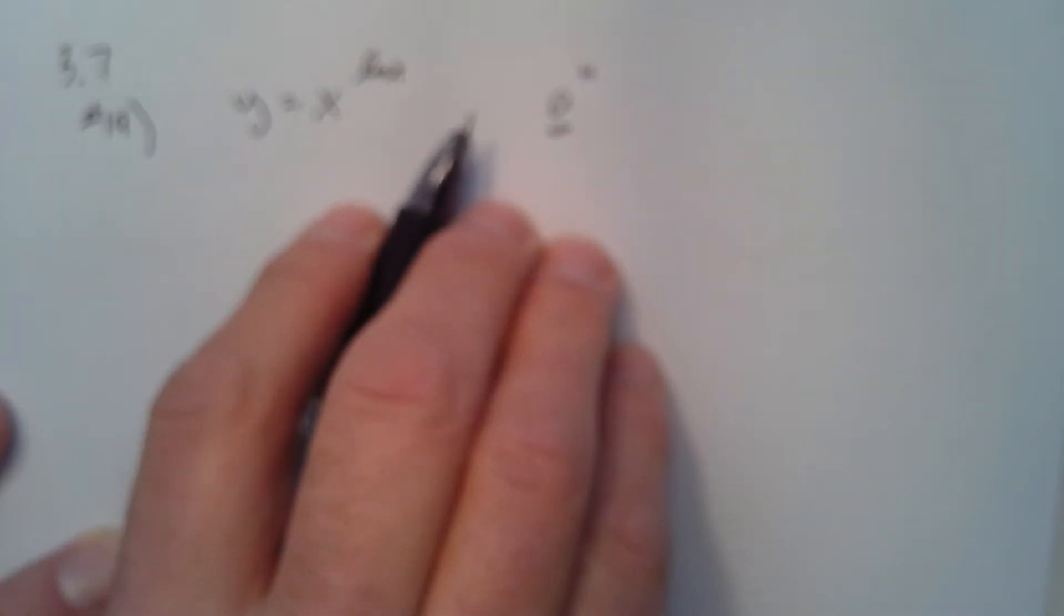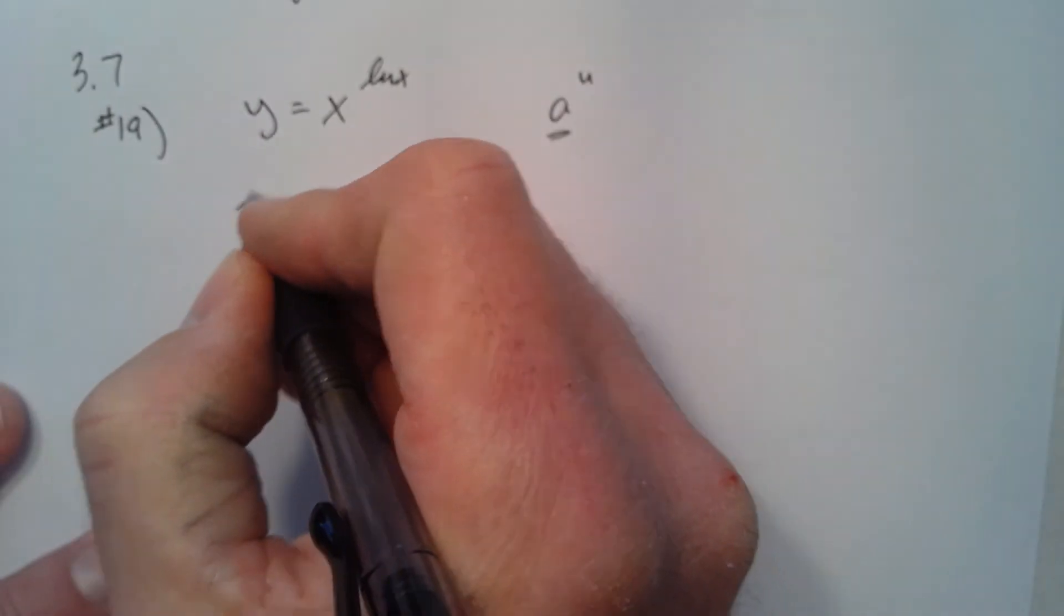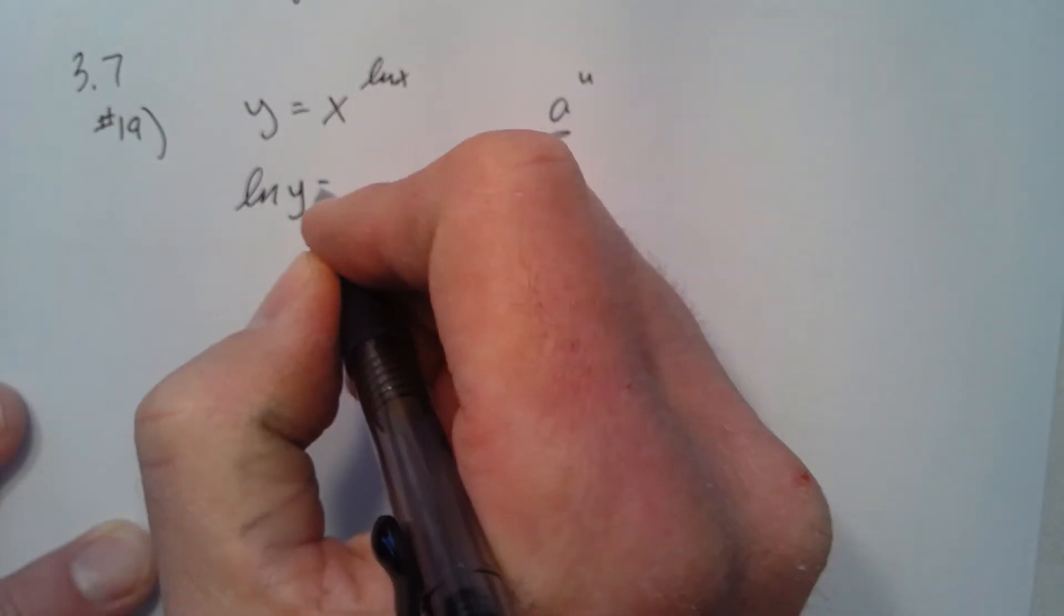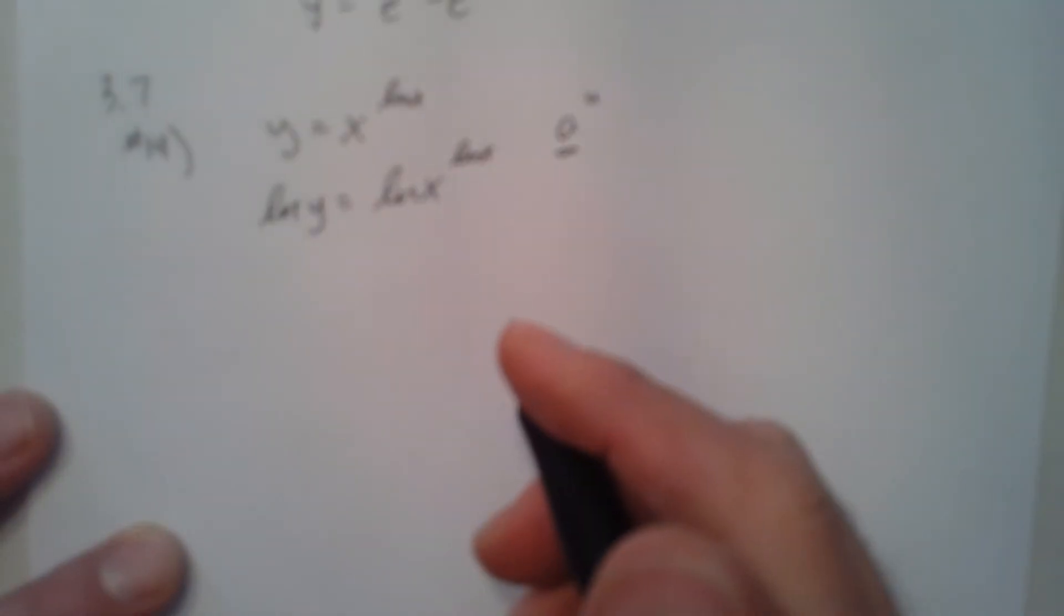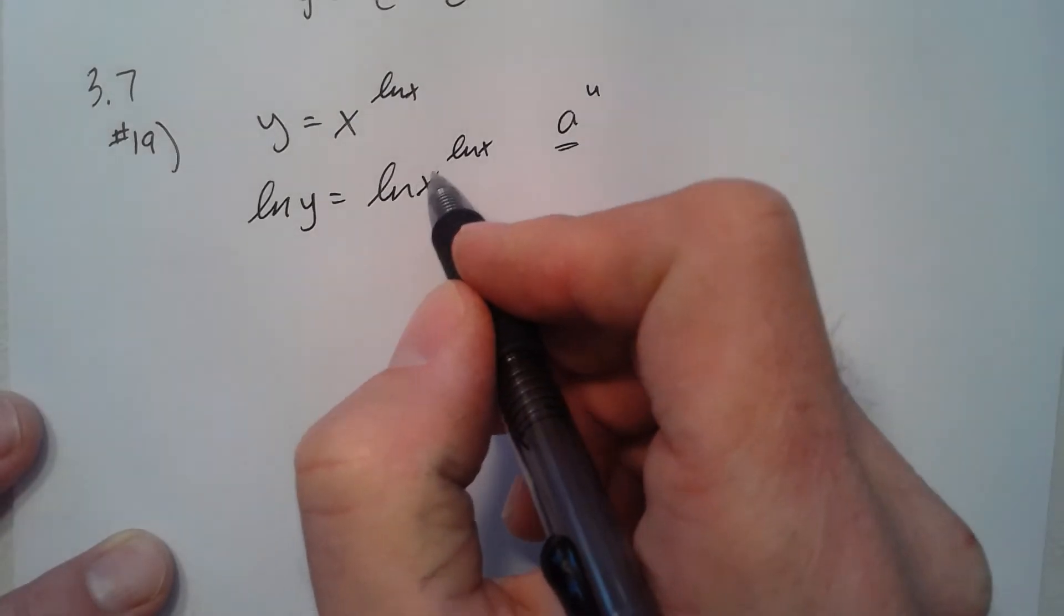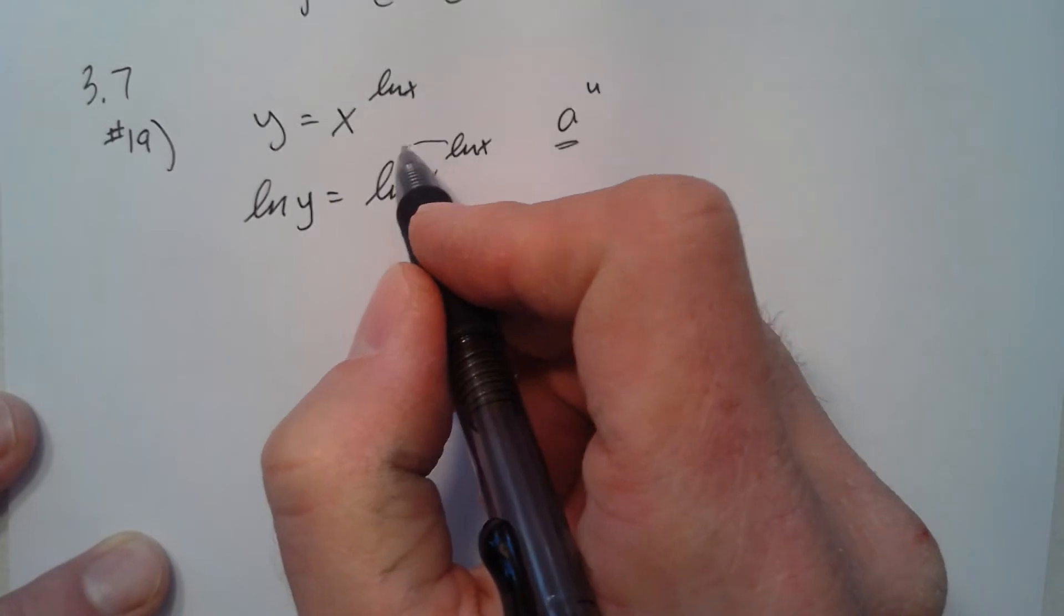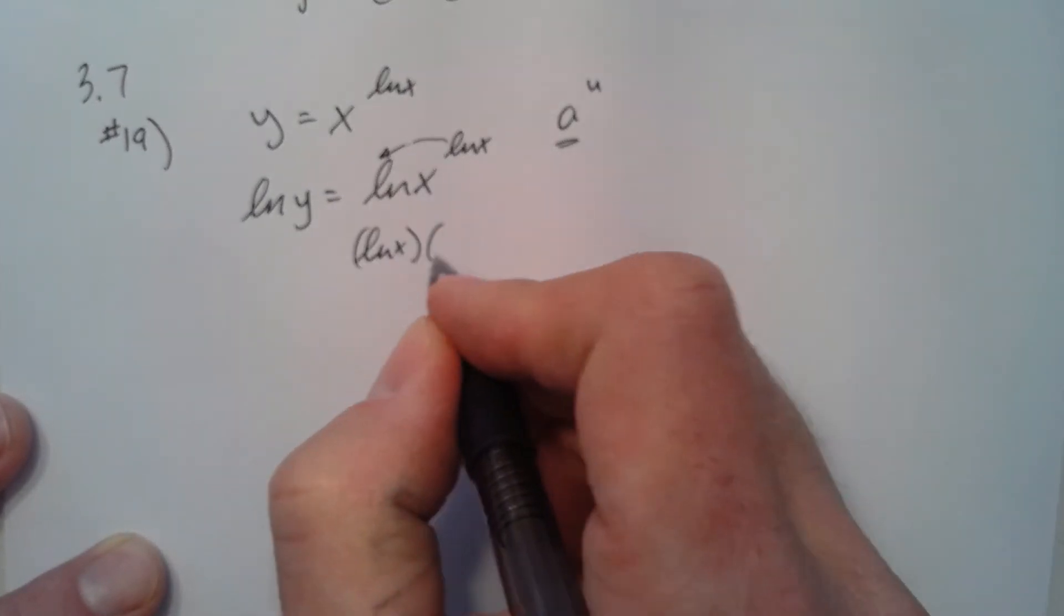Alright, so we take the natural log of y equals the natural log of x to the natural log of x. The natural log of each side. And then one of our log properties - the exponent can go up front, so I have natural log of x times natural log of x.